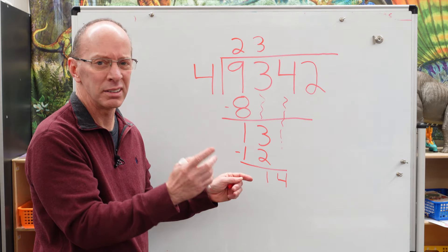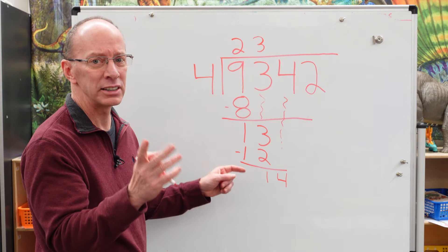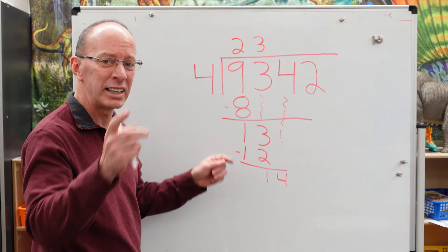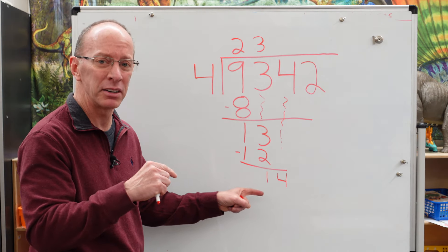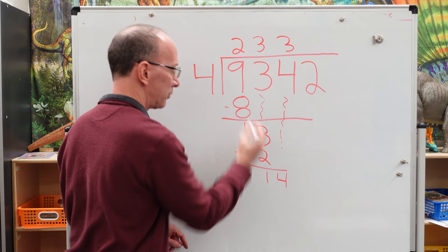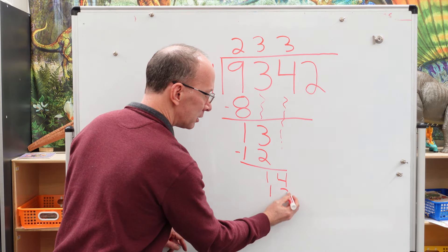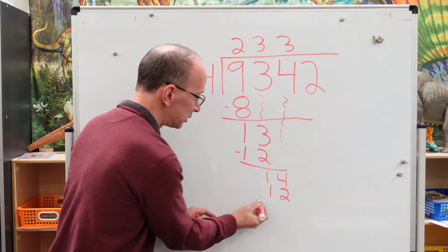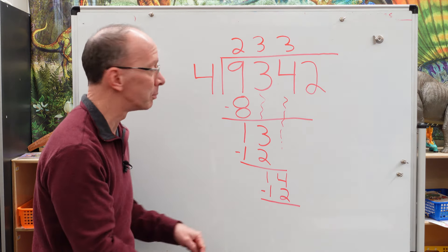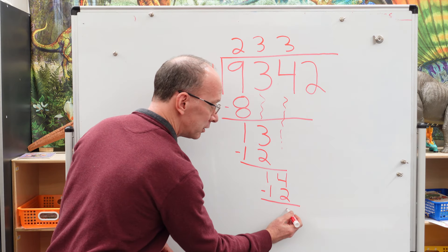Four times six. I don't know. I think we're getting too high on there. Four times four is 16. I think four times three is 12. I think that's going to be a better number. So again, we're going to put a three right here. Three times four is 12. Put the 12 there. Subtract it again. I'm trying to write a little smaller so we got enough room on our board now. And four minus two is two.